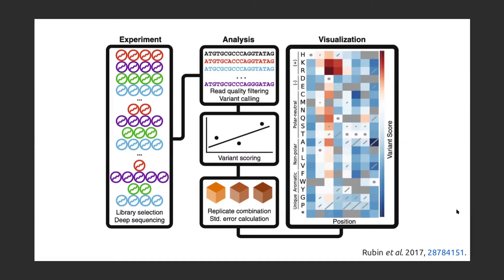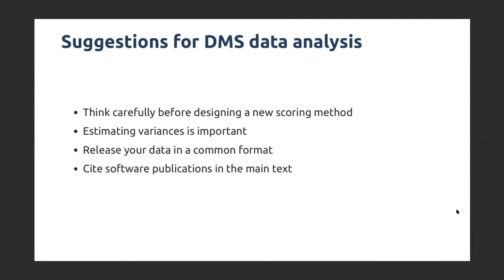I've spent a lot of time thinking about visualization. If you want to ask questions about visualization, I would love to do that. If you want to know why gain of function should always be red, I'm happy to defend that. But in the spirit of the workshop, I thought I'd start with a few big-picture suggestions for assigning scores to variants and doing DMS analysis.